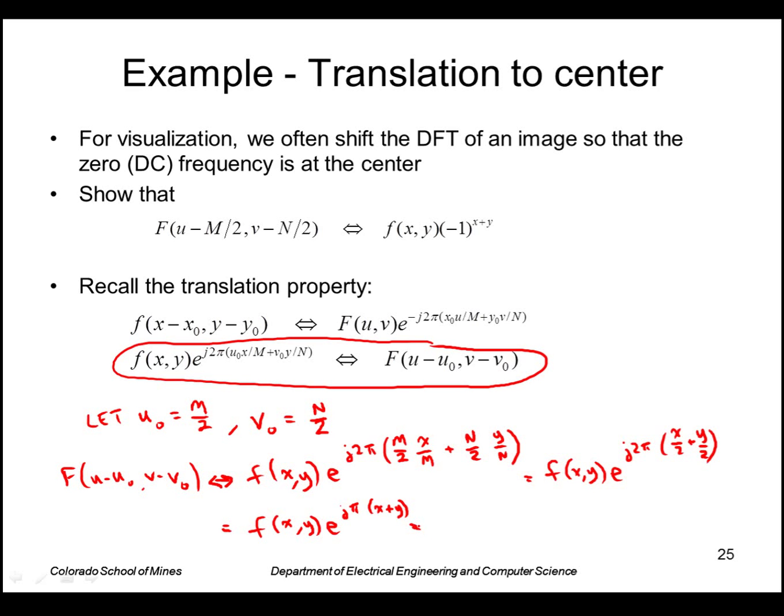We use Euler's formula that e^(jπ) equals cosine(π) plus j sine(π), so that's just -1. So it's (-1)^(x+y).